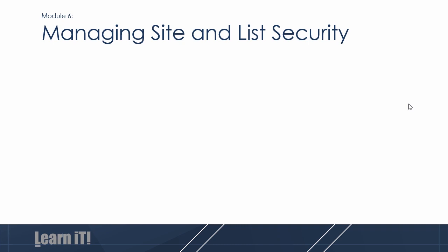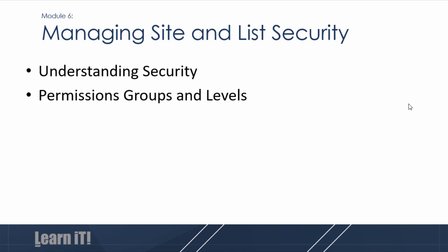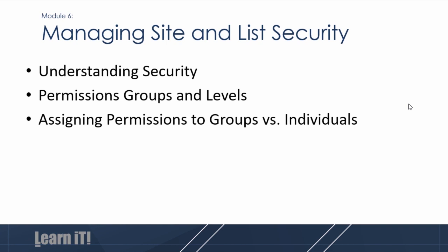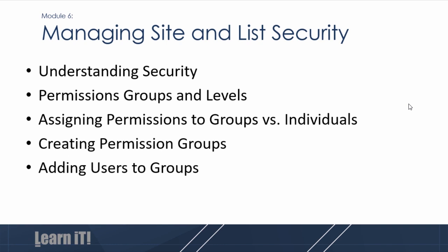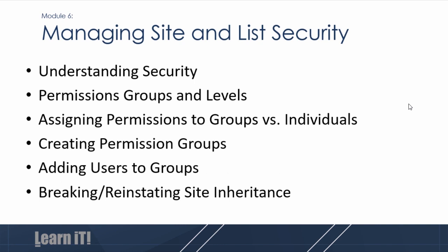Welcome to Module 6: Managing Site and List Security. In this module, we'll talk about understanding security as it exists in SharePoint — understanding when you do have permission, what to expect, and when you don't, how can you tell. We'll talk about permissions groups and levels, how you need both to effectively administrate a SharePoint permissions structure, the difference between assigning permissions on a group versus an individual level, creating permissions groups, adding users to groups, and breaking and reinstating site permissions inheritance.